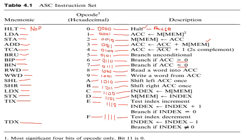Starting from the first instruction: the HLT instruction is the halt instruction having opcode 0, or hexadecimal representation 0. The binary representation will be 0000 for this first instruction. The description of the HLT instruction is halt or pause.